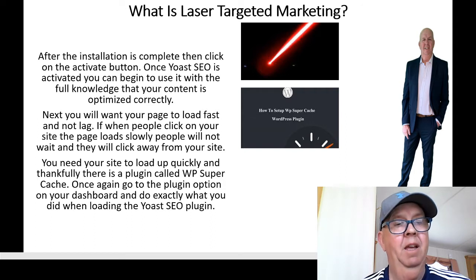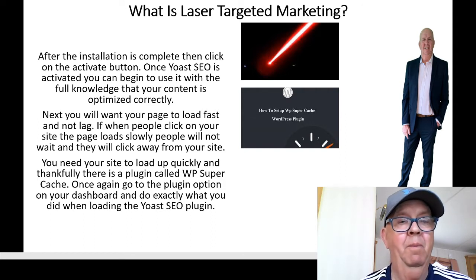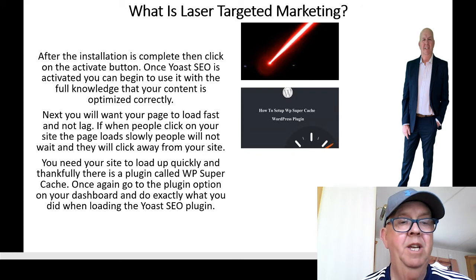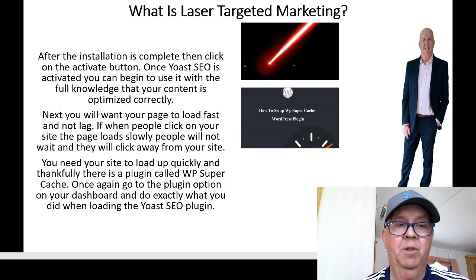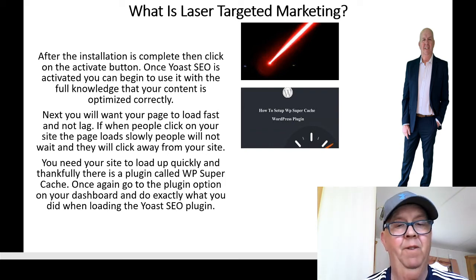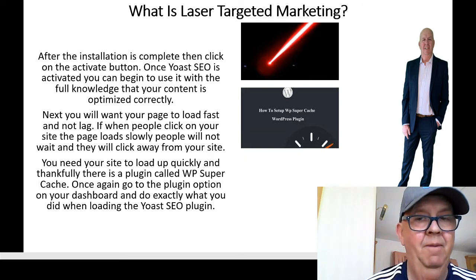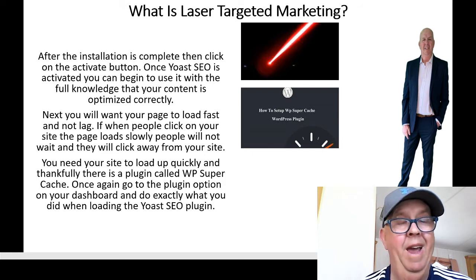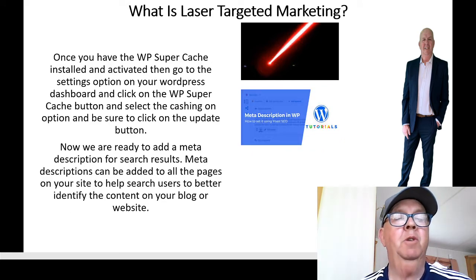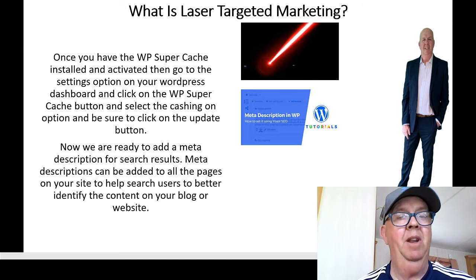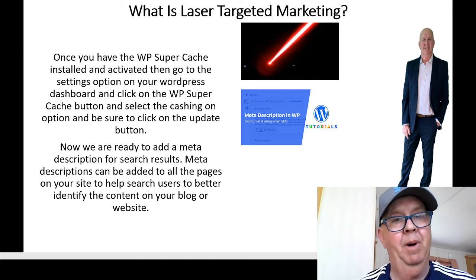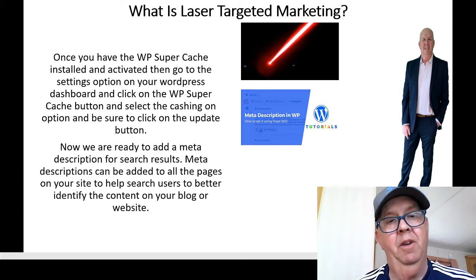Next, you want your page to load fast and not lag — this is crucial. If people click on your site and the page loads slowly, they will not wait and will click away. Thankfully, there is a plugin called WP Super Cache. Go to the Plugins option on your dashboard, install and activate it just as you did with Yoast SEO. Once WP Super Cache is installed and activated, go to Settings, click on the WP Super Cache button, select the Caching On option, and be sure to click the Update button. You must keep saving or updating whatever changes you make.